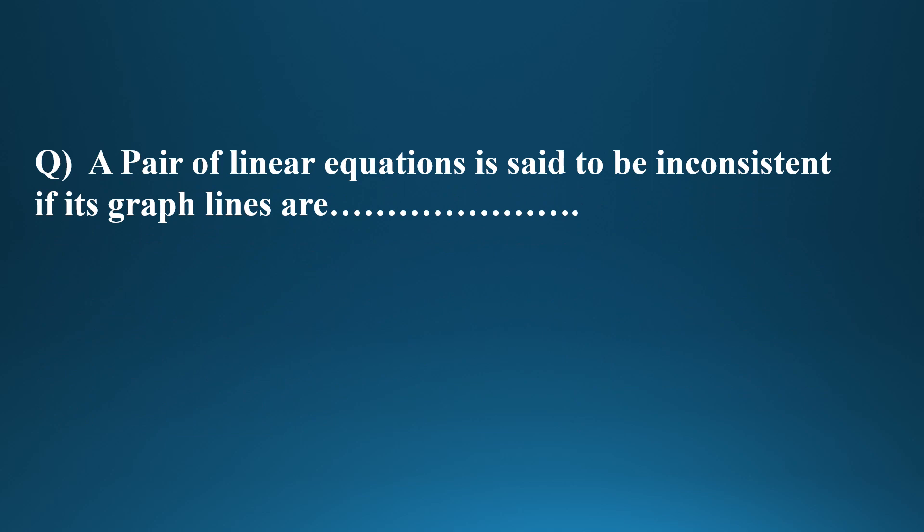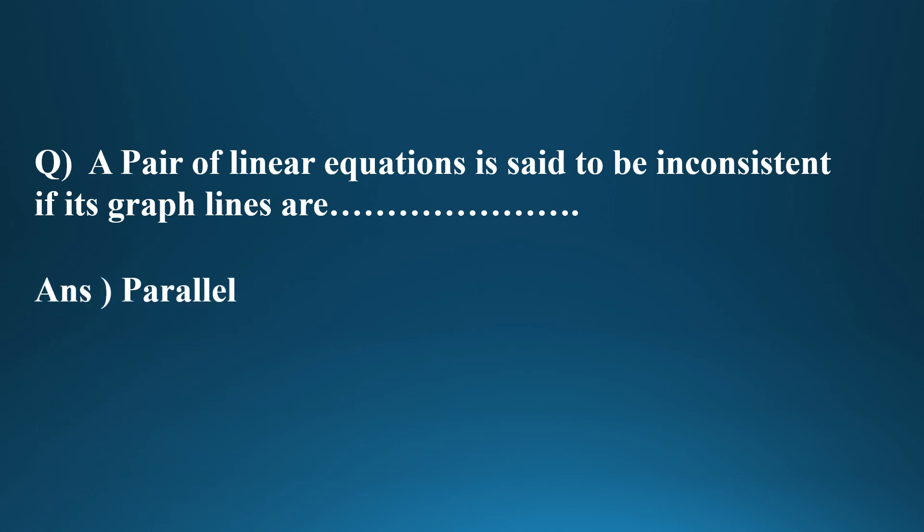Next question: A pair of linear equations is said to be inconsistent if its graph lines are parallel. Parallel lines do not intersect, so no solution exists.